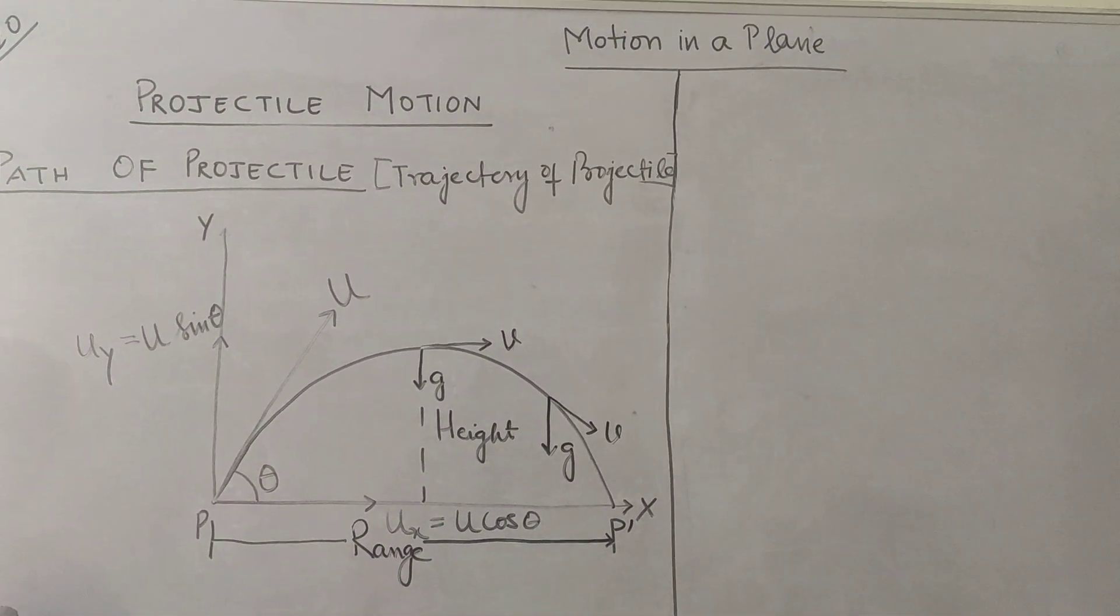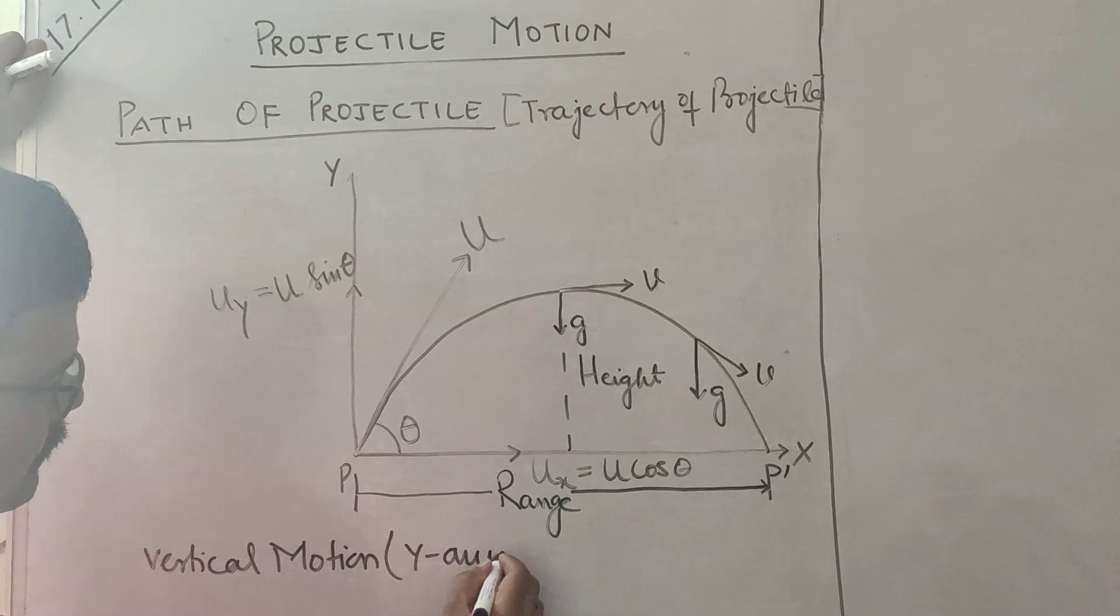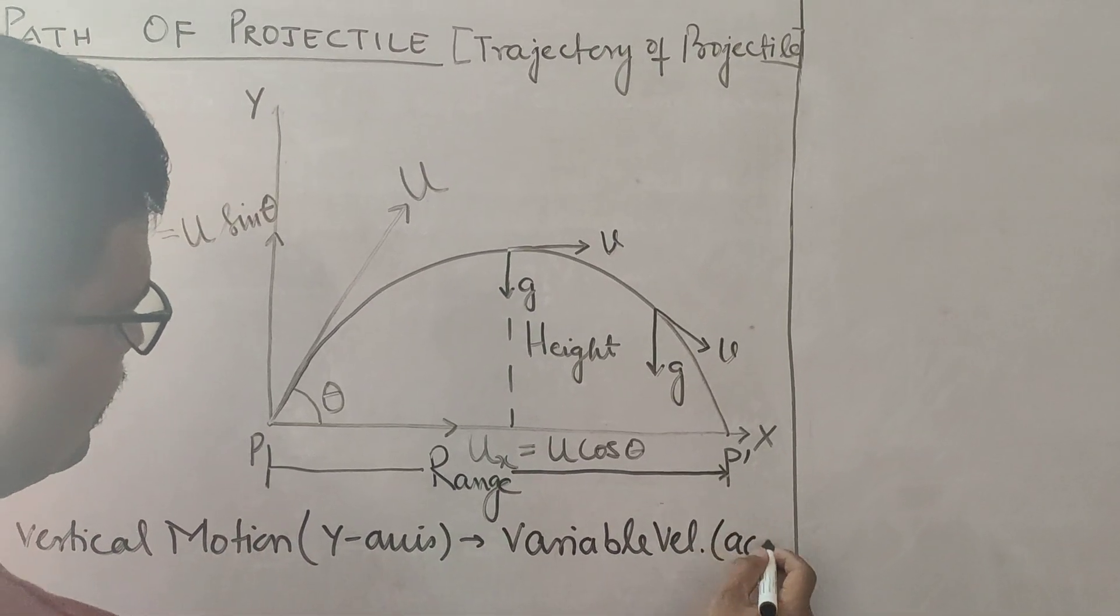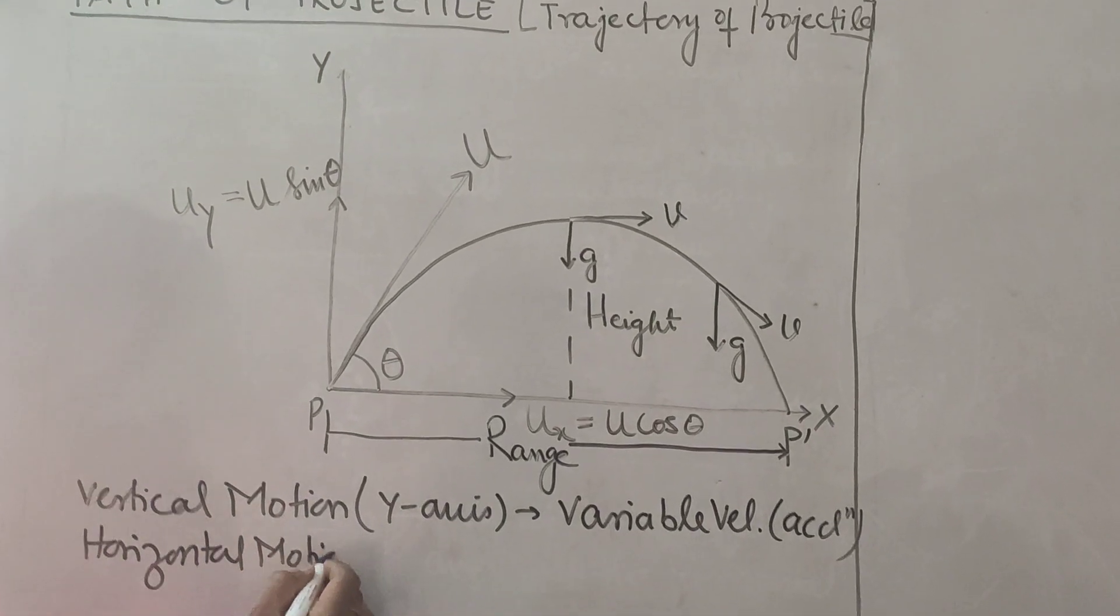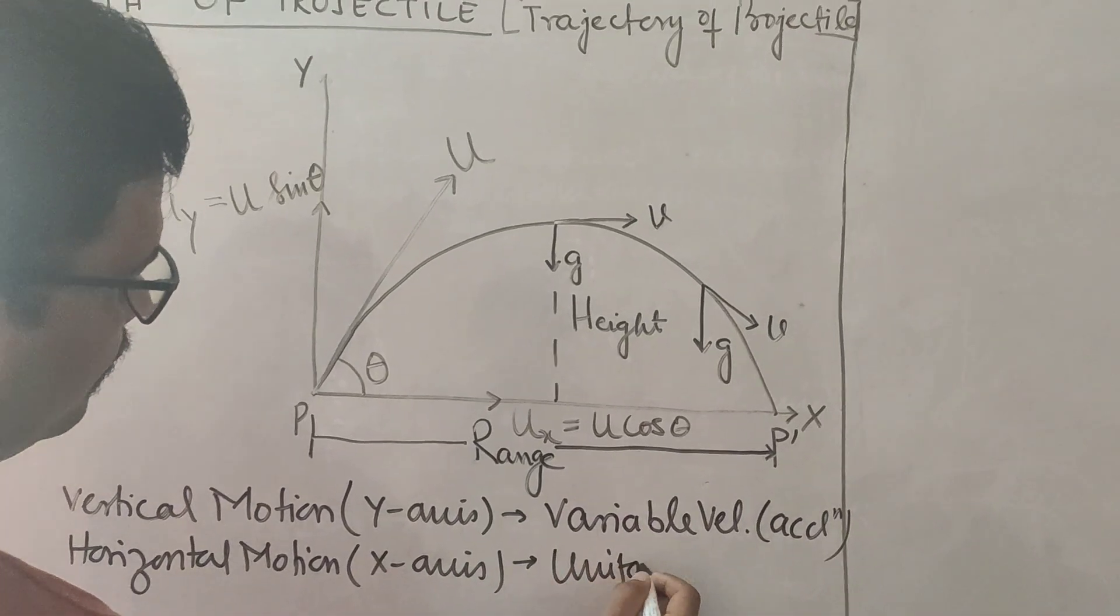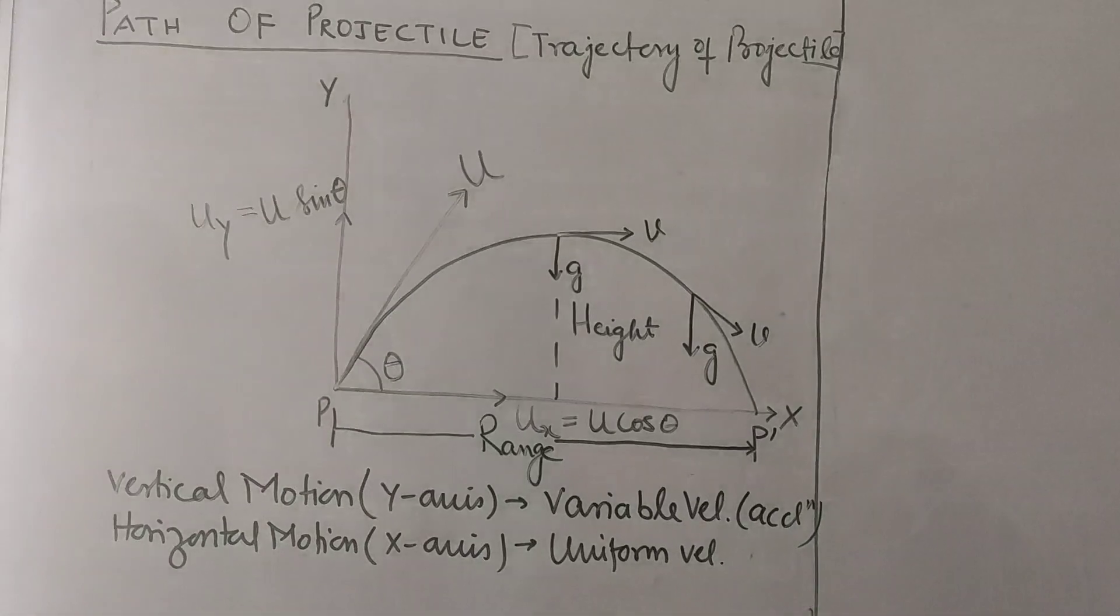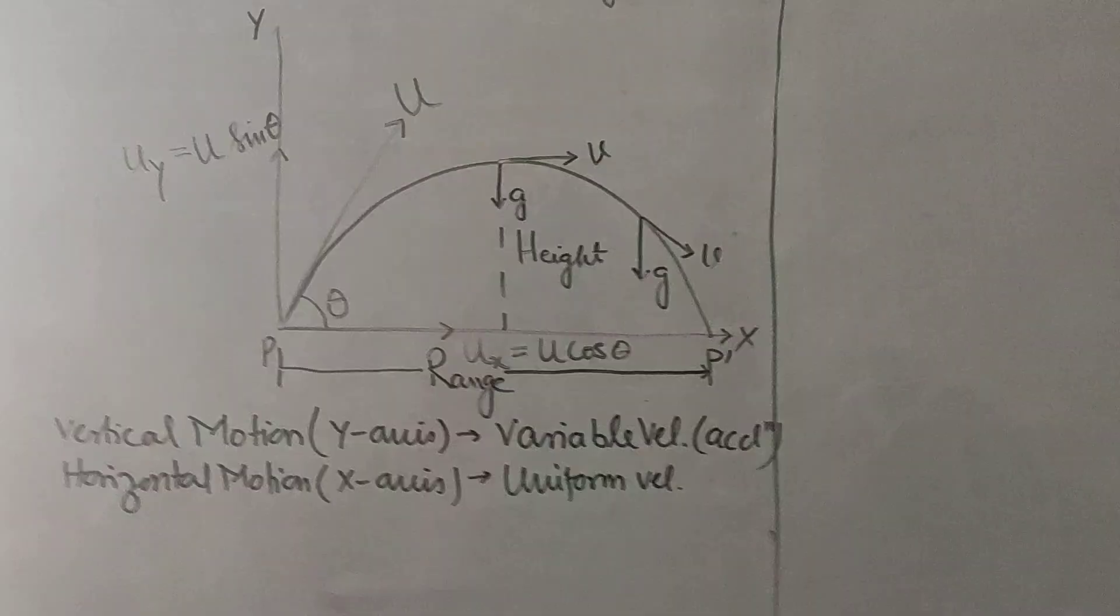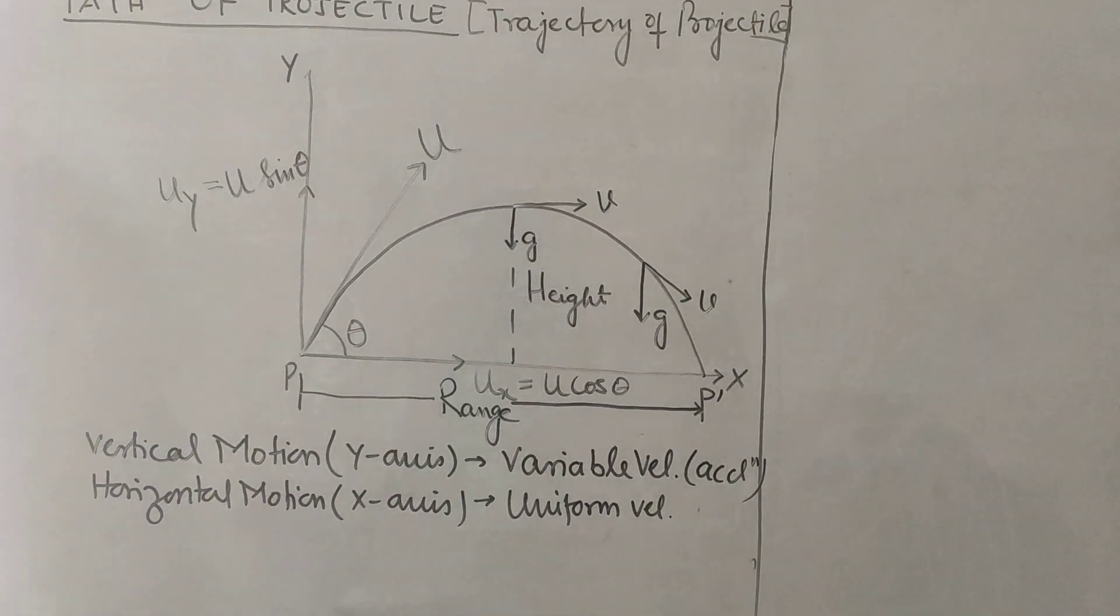So let us consider. I have already told you that vertical motion along y-axis is with variable velocity that is accelerated motion and horizontal motion is uniform velocity. So you all know that equation of motion is applied only on accelerated motion. So when we will use vertical motion, we will use equation of motion. That is accelerated motion. And if we are using horizontal motion, when a body is moving with uniform velocity, you need to use only the formula of speed as it equals distance upon time.